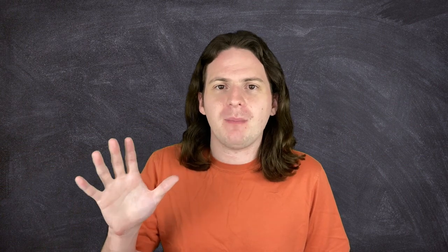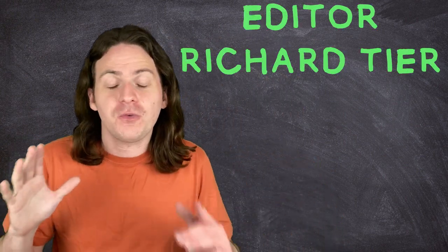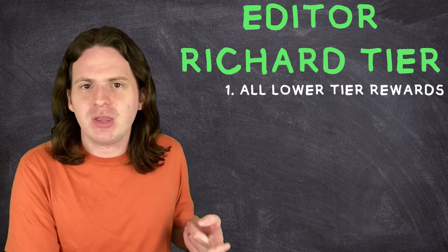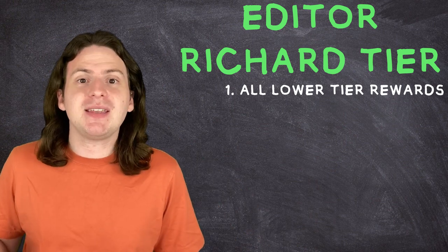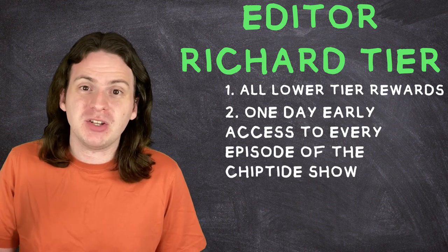If you want to contribute just a little bit more, then for $5 a month, you can be in the Editor Richard tier. This one's kind of cool. So first of all, you get access to all the rewards from the previous tier. So naming the credits, voting on the video ideas, you still get that. On top of that, you will get one day early access to every single episode of The Chip Tide Show.